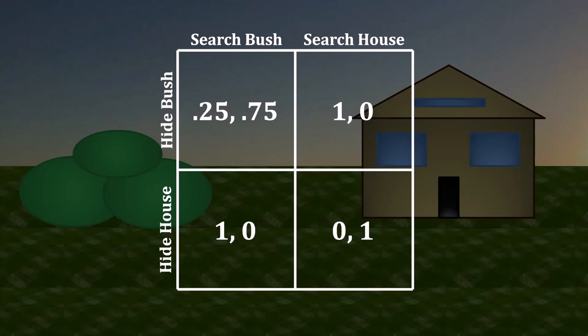To answer the puzzle questions, all we need to do is solve the game. Despite the addition of camouflage, the structure here is still that of a basic guessing game. You want to mismatch strategies, whereas your opponent wants to match strategies. If you hide behind the bush, your opponent wants to search the bush. But if your opponent is searching the bush, you want to hide behind the house. But if you're hiding behind the house, your opponent wants to search behind the house. But if your opponent is searching behind the house, then you want to hide behind the bush — and so the cycle begins anew. Thus, each of you needs to randomize to prevent the other from exploiting predictability.